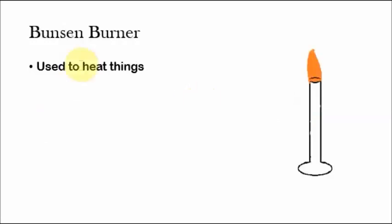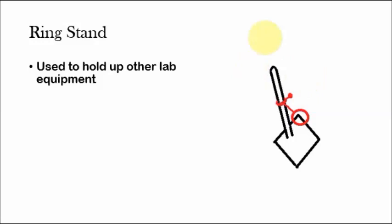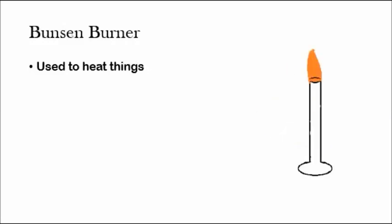And then the Bunsen burner is used to heat things. So usually you could use a ring stand for this. You'd set up the ring stand, then you'd put this clamp here, and then you'd put the Bunsen burner underneath. And then whatever you're trying to heat, you'd put on top of the ring stand. And that's how you can heat something.